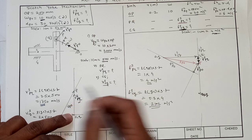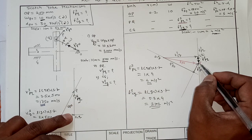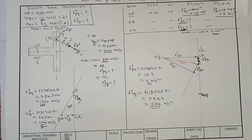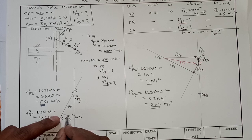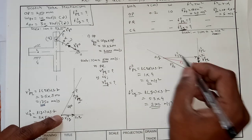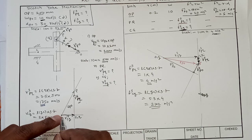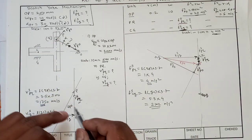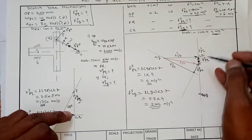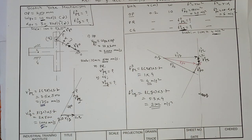Looking at the velocity polygon, slider P is moving upward, but its acceleration vector is downward — meaning slider P is retarding. For slider C (the slotted link), the slotted link moves to the right as indicated by the velocity vector, and its acceleration vector is also towards the right — meaning the slider is accelerating. Slider P is retarding because its velocity vector is upward and acceleration vector is downward. Thank you.